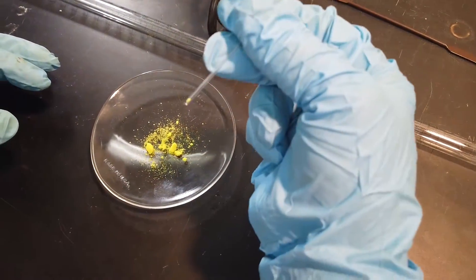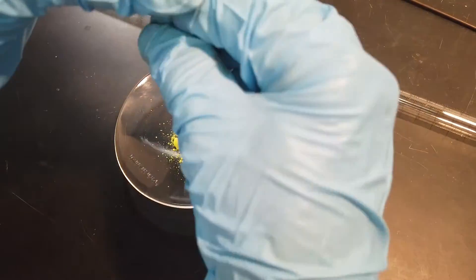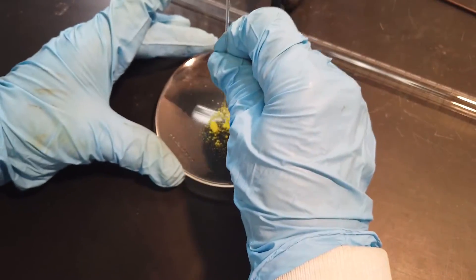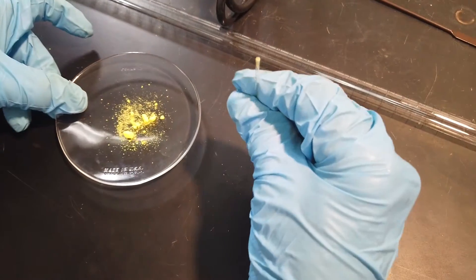Then turn it over and gently tap the capillary tube on the lab bench to get the solid to fall to the bottom. Repeat this step until you have a few millimeters of solid at the bottom of the tube.